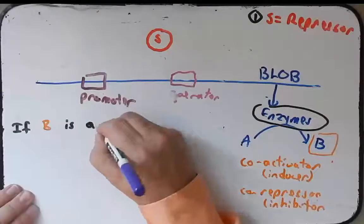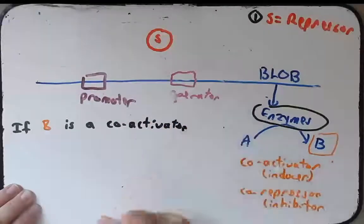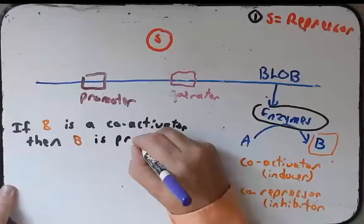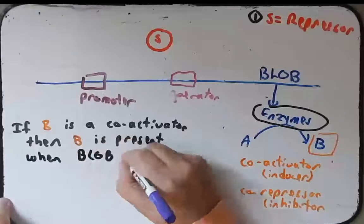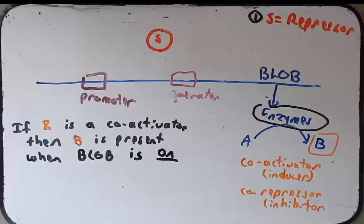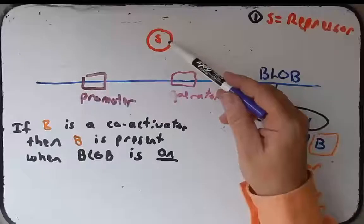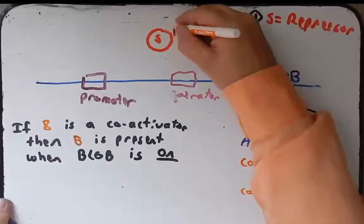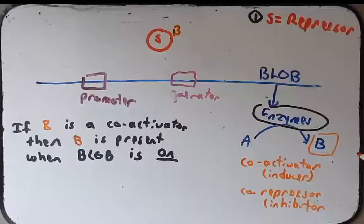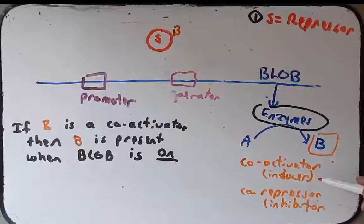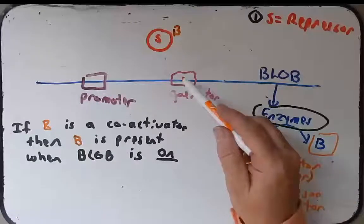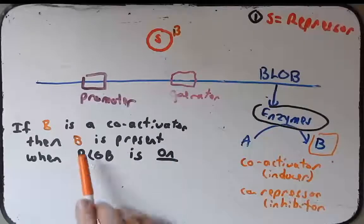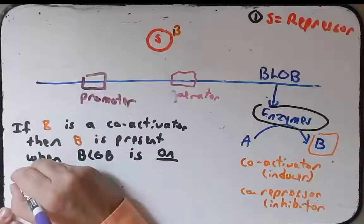So if B is a co-activator, then B is present when the blob operon is on. If B is a co-activator, its job would be to help activate the blob operon. So that means it's going to be present to bind to the S repressor to pull it off. So in this scenario, if B is a co-activator, it will bind to the repressor to cause that allosteric change to pull the repressor off of the operator. Remember, the co-activator's job is to help activate transcription. B would have to be present in the on state.